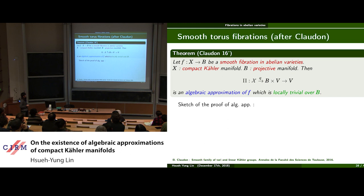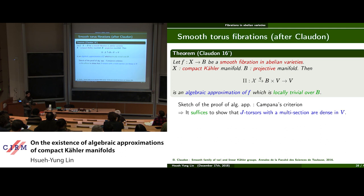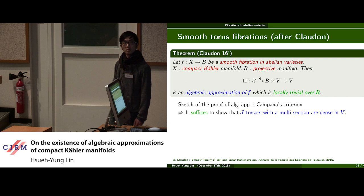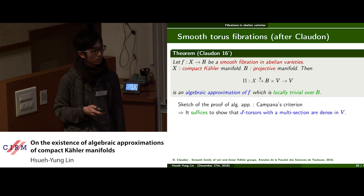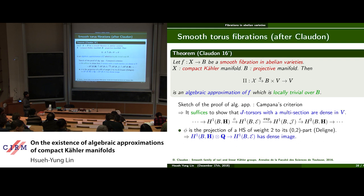Let X be the map induced by the exponential map from E to J introduced in the previous slide. Then there is a family of J-torsors parametrized by the vector space V, where each point T in V parametrizes the J-torsor corresponding to eta(F) plus exponential of T, where eta(F) is the element in H^1(J, curly-J) corresponding to the original J-torsor. This family is called the tautological family associated to F. The result of Beauville-Claudon: let F be a smooth fibration in abelian varieties with X a compact Kähler manifold and B a projective manifold; then the tautological family is an algebraic approximation of F which is locally trivial over B. The proof: by Campana's criterion, it suffices to show that J-torsors with a multi-section are dense in V, because the base is projective, the fibers are projective, and if there is a multi-section the total space is algebraically connected, hence projective.